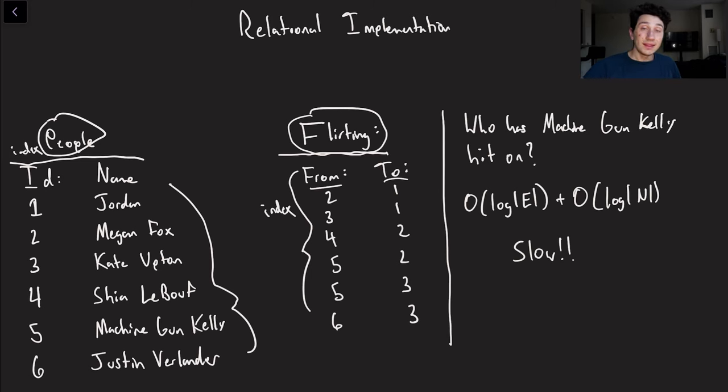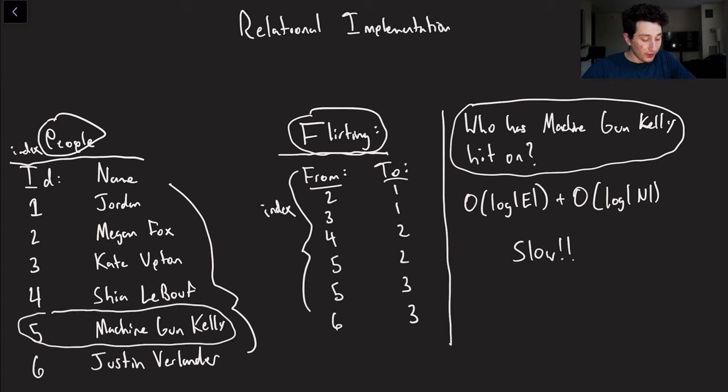Now keep in mind to keep this thing as fast as possible we probably want to put an index on the from column and then we also want to put an index on our ID column so we can find people as quickly as possible. So why is it that this implementation of a graph is a little bit less than ideal? Well let's try and demonstrate that by answering the question who has Machine Gun Kelly hit on? So first by doing this we would start by finding Machine Gun Kelly so that is going to be a node with ID number five and then we would check out our flirting table.